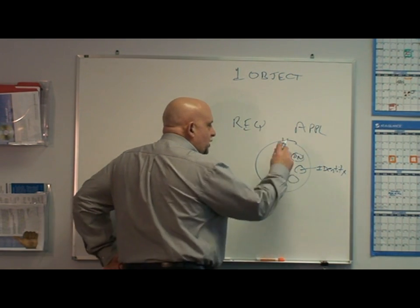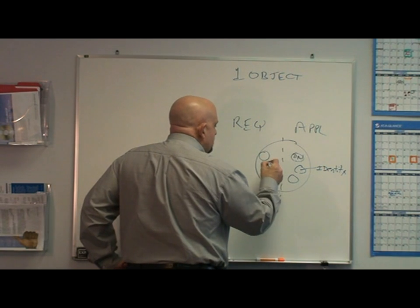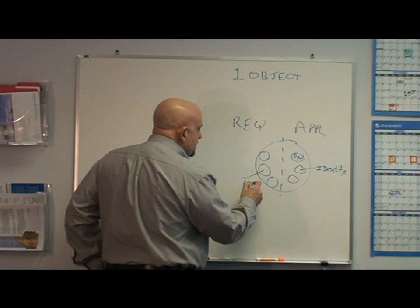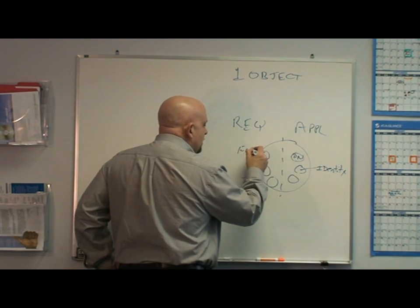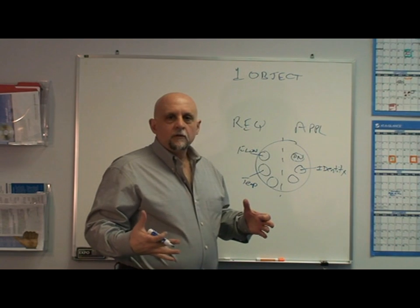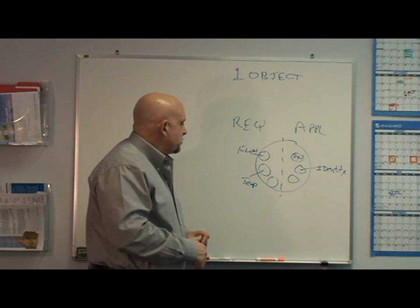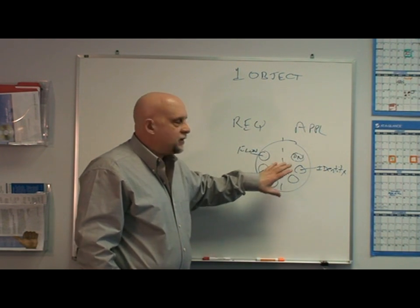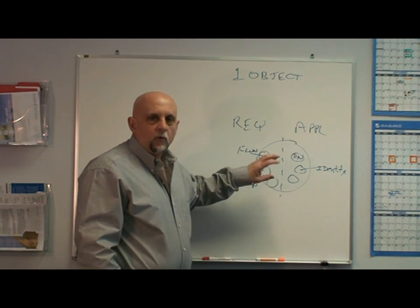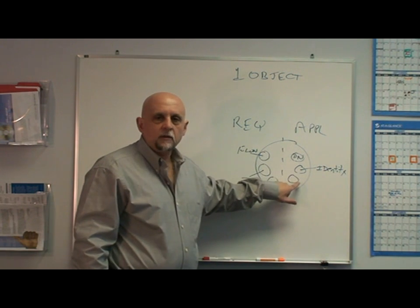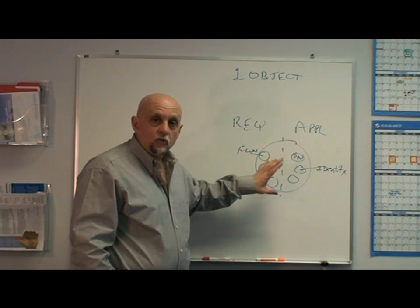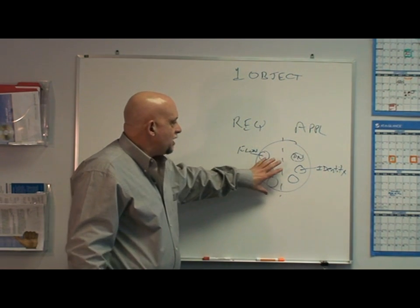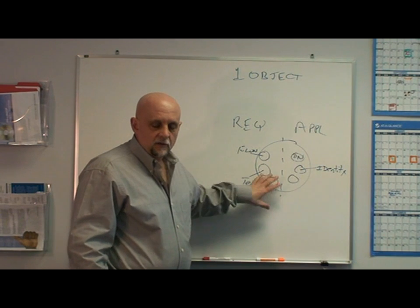Those are required objects. You also have application objects. If you're implementing a flow controller, you might have a temperature object that holds the temperatures you measured, and a flow object that has the current flow being measured. You organize your data in a DeviceNet device in terms of objects with attributes for each data item. That's not how you do it in software — in software you can do it any way you want. It's just the representation to the network that is object-based.